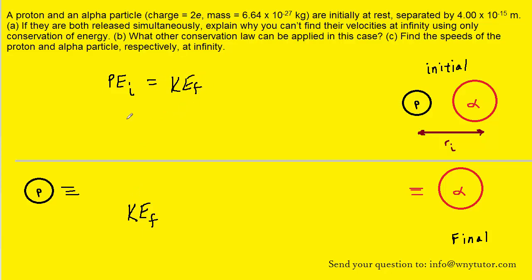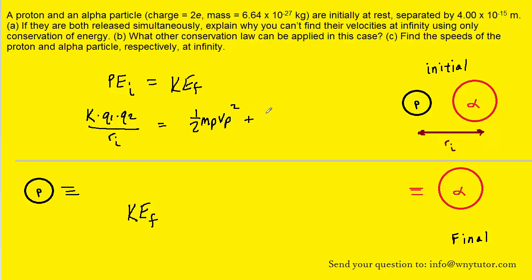We can fill in the known expressions for electrical potential energy as well as kinetic energy. Electrical potential energy between two charges is K multiplied by the first charge times the second charge, divided by the distance between them — labeled r sub i in the diagram. The final kinetic energies would be one half times the mass of the proton times the speed of the proton squared, plus one half times the mass of the alpha particle times the speed of the alpha particle squared.